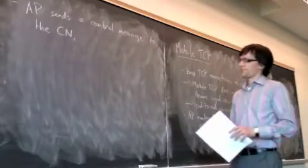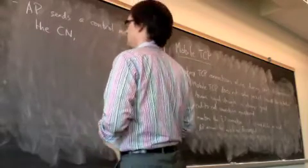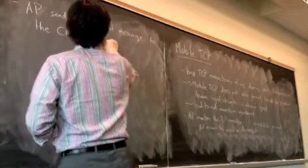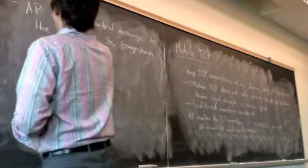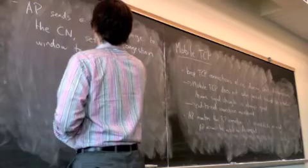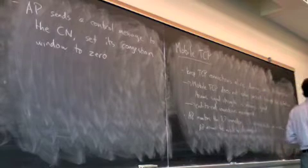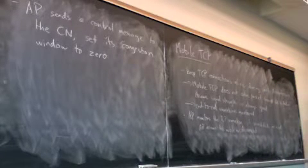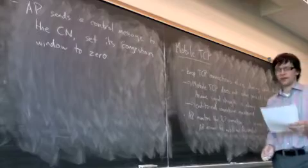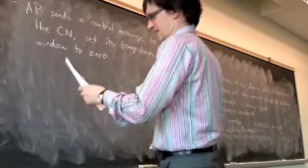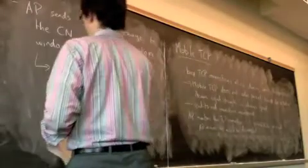The exit point will instruct the corresponding node to set its congestion window to zero. If you can send zero packets before acknowledgement, the logical interpretation is that you can't send packets at all. Once a window size is set to zero, there's a special name for that — a TCP connection with a window size of zero is said to be in persistent mode.